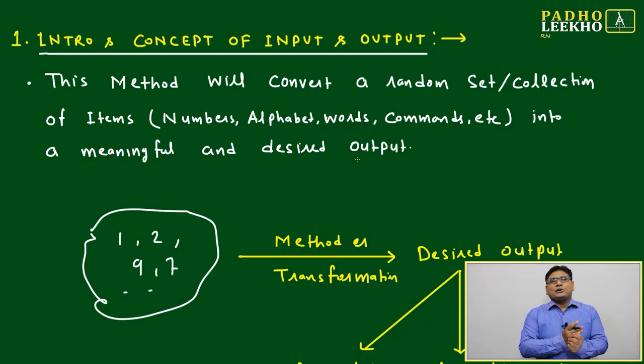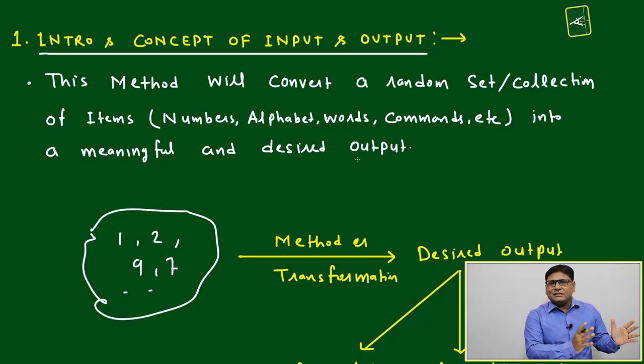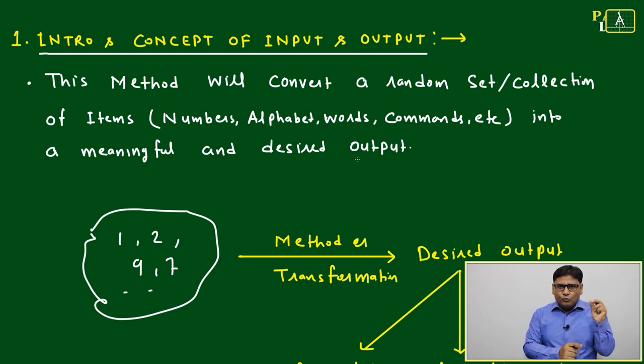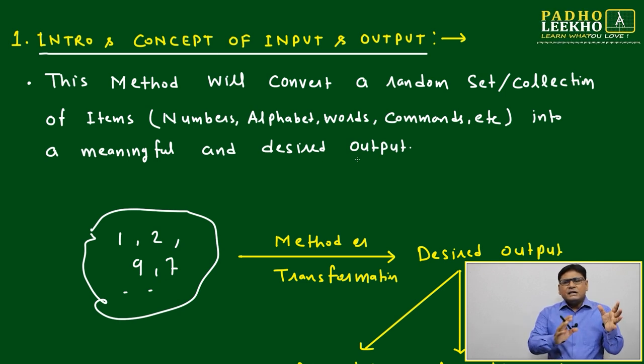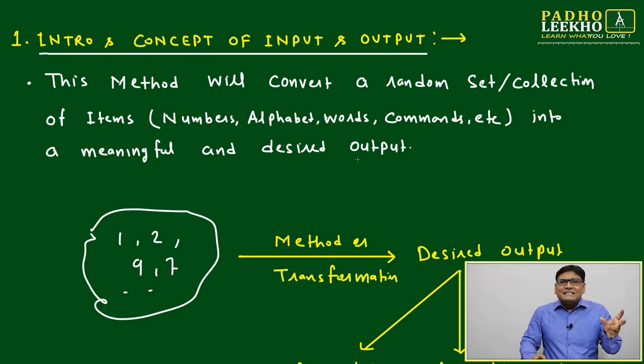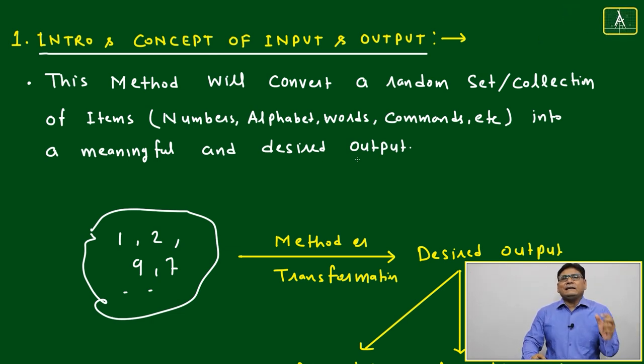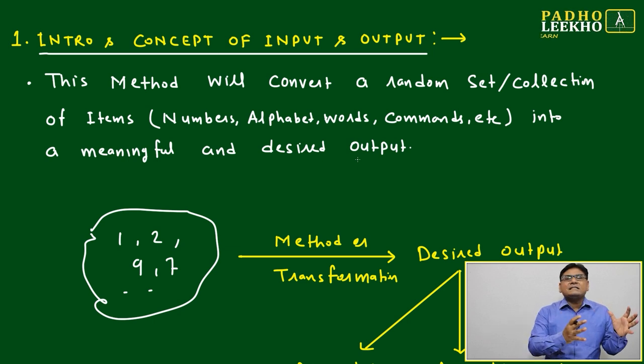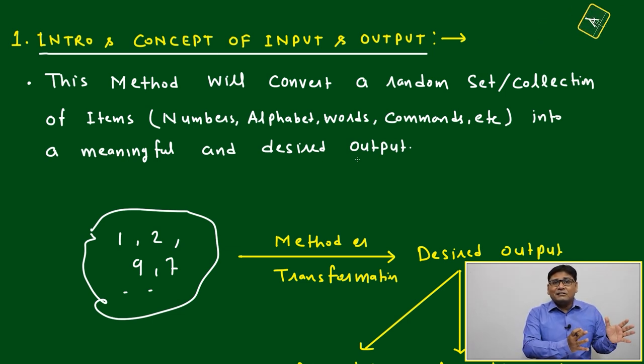As we try to understand what is input and output, just by name itself you can say something we have to provide as input, something we will get as output. This is a common way we can understand, but exactly in reasoning, how to define and conceptualize this concept mathematically and linguistically.